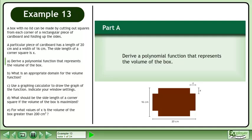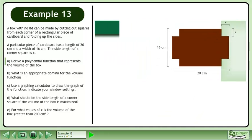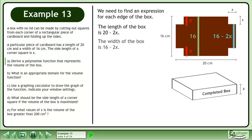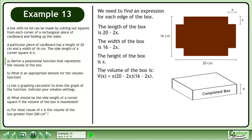In Part A, derive a polynomial function that represents the volume of the box. We need to find an expression for each edge of the box. The length of the box is 20 - 2x. The width of the box is 16 - 2x. The height of the box is x. The volume of the box is V(x) = x(20 - 2x)(16 - 2x).